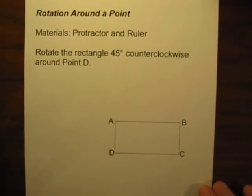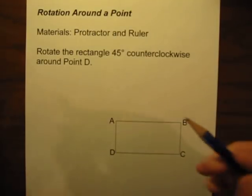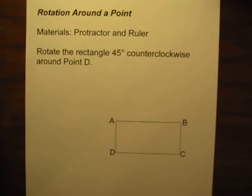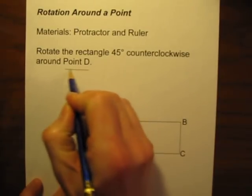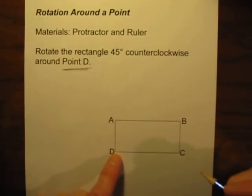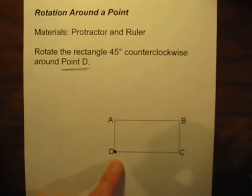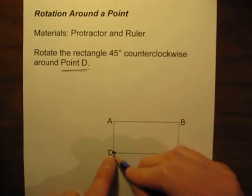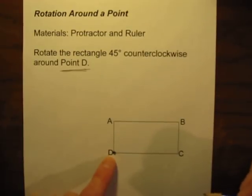When we're doing rotations, there are three things you need to know before you can actually do the rotation. Number one, you need to know what is the point that everything is going to be rotating around. Here in this problem, it tells us we're going to be rotating the shape around point D — one of the corners or vertices of this rectangle. Point D will be our center of rotation, so point D will stay in place while the other points spin around it.